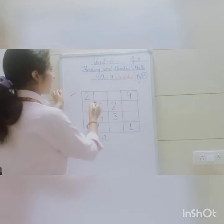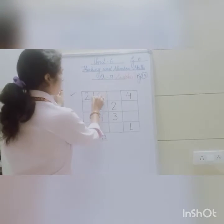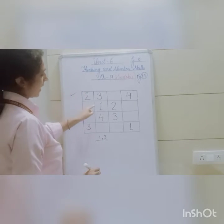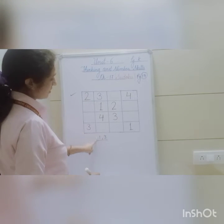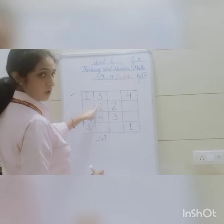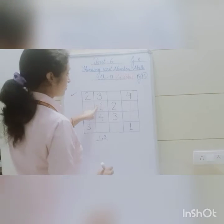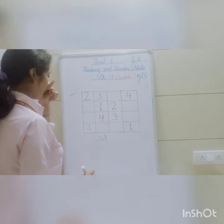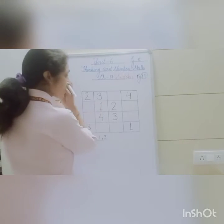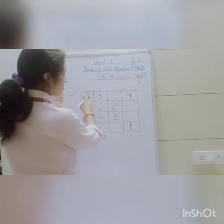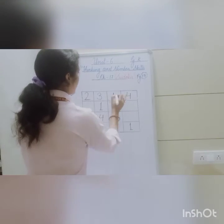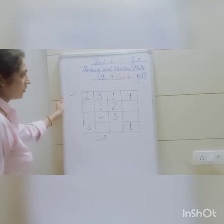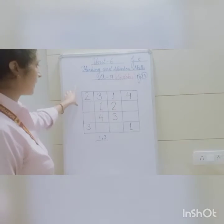So I will fill 3 here, and 1 is not yet in this column, so 1 will go in the remaining blank. So the numbers 1, 2, 3, 4 are all filled in this first row and it is now complete.